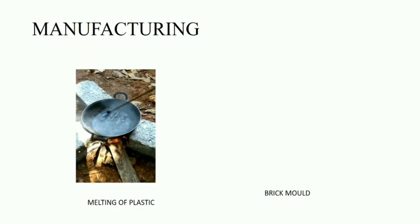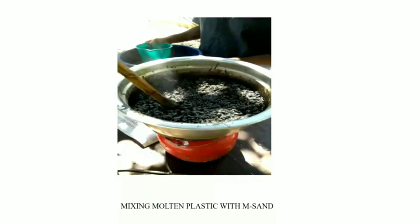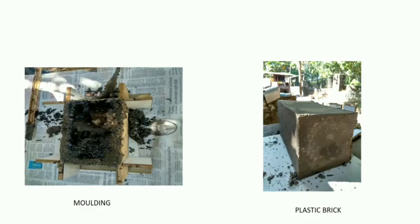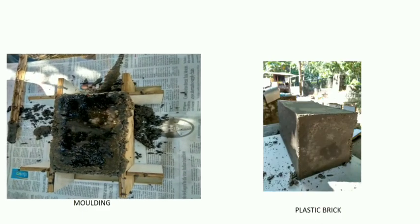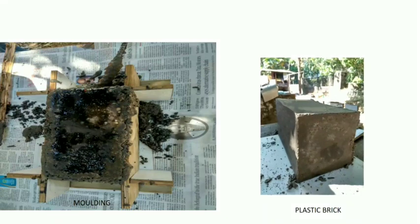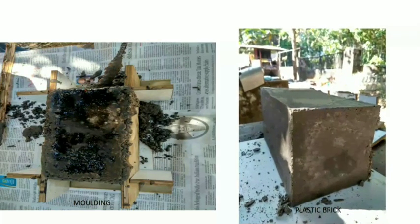Collected clean plastic bottles are melted, and M-sand is added and mixed thoroughly. We then cast using a brick mould of 20x20x10 cm. The brick is kept to cool down and is removed from the mould after an hour.